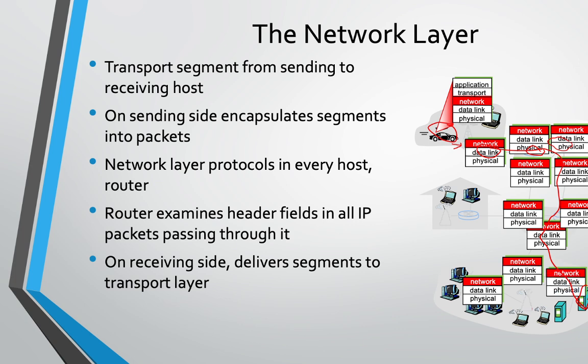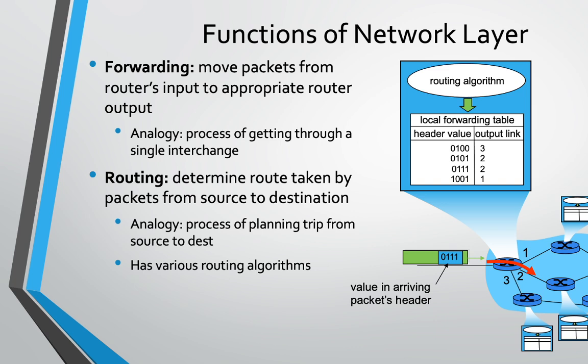Ultimately, the packet is received by the receiver, and from the network layer it goes to the transport layer, then to the application layer, where a particular application will receive it. The main functions of network layer are forwarding and routing.